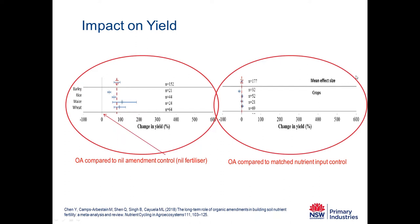However, where the organic amendment is matched against a nutrient input control — where the control includes nutrients to match those supplied by the organic amendments — there is actually no impact whatsoever on yield. In fact, with barley there was a very slight but statistically significant decrease. This is a key data point: the main outcome of organic amendments on yield is based on their nutrient input.